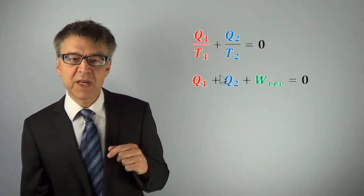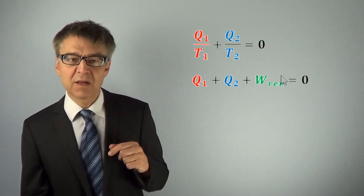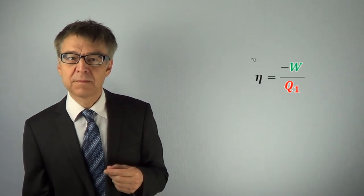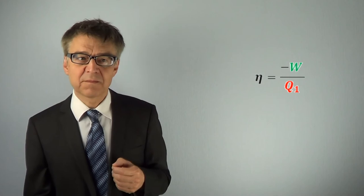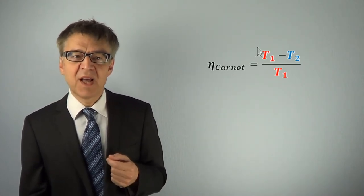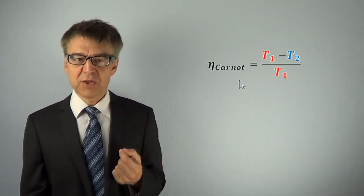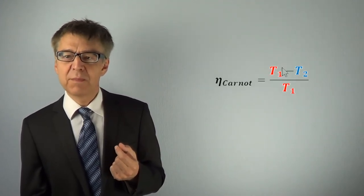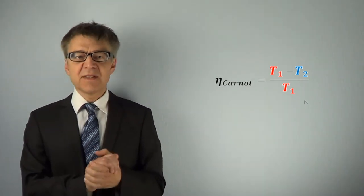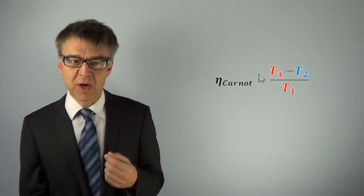And this is now limiting its efficiency eta. We combine these two equations for the first and the second law and calculate the quotient negative W over Q1, defined as the efficiency. We see that the efficiency must always be less than one. A Carnot engine and any other reversible heat engine can never fully convert heat into work. The best efficiency in the reversible case will be delta T over T1. For instance, at a temperature of 600 Kelvin for T1 and 300 Kelvin for T2, then at best half of the absorbed heat Q1 can be converted into work.